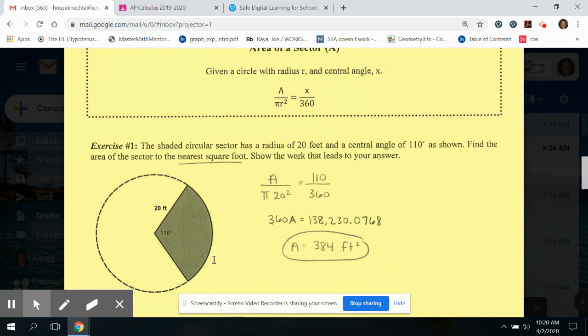For this first example, I want to know the area of the shaded sector, so I'd put A for area because that's what I'm trying to find. Because I know that the radius is 20, I can compare this piece to the entire area of the circle, so that's your pi r squared, so this would be pi times 20 squared.